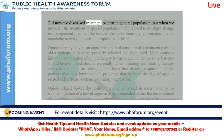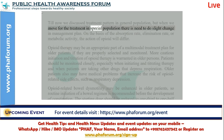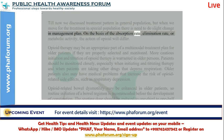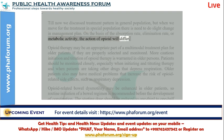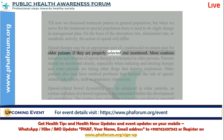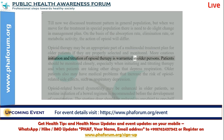Until now we discussed treatment patterns in the general population, but when we move to treatment in special populations, there is a need to make slight changes in the management plan. On the basis of absorption rate, elimination rate, or metabolic activity, the action of opioids will differ. Opioid therapy may be an appropriate part of a multimodal treatment plan for older patients if they are properly selected and monitored. More cautious initiation and titration of opioid therapy is warranted in older persons.